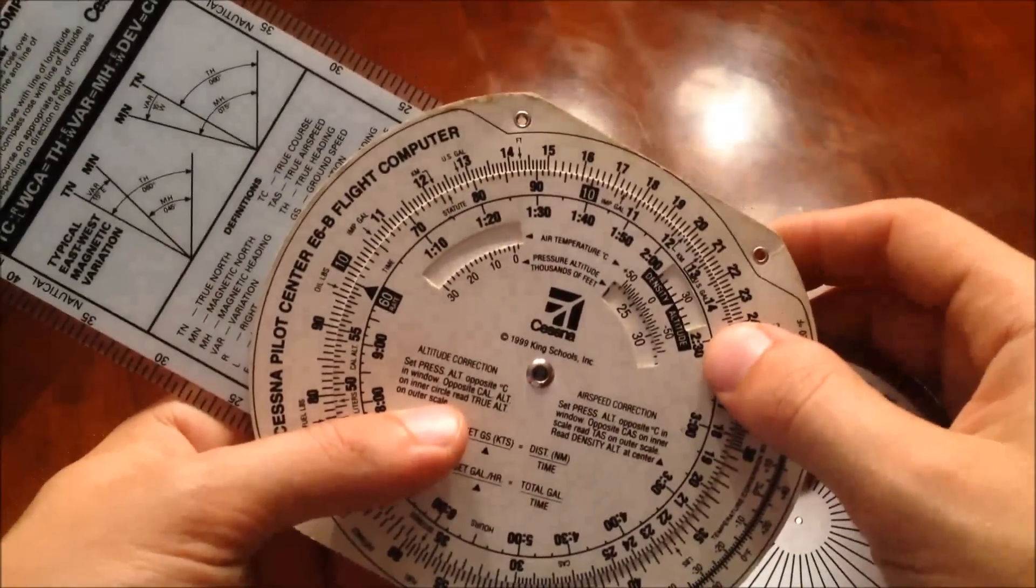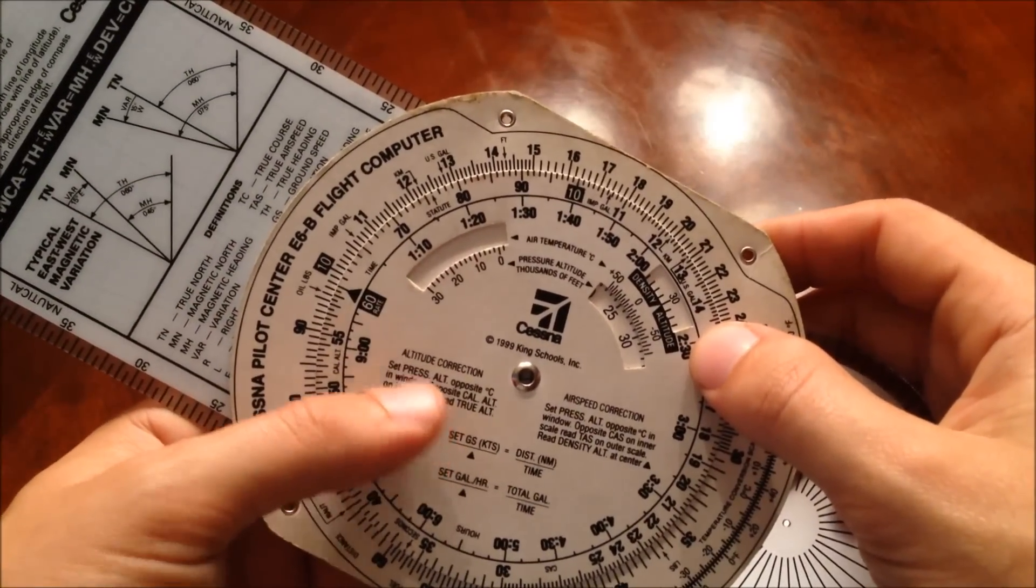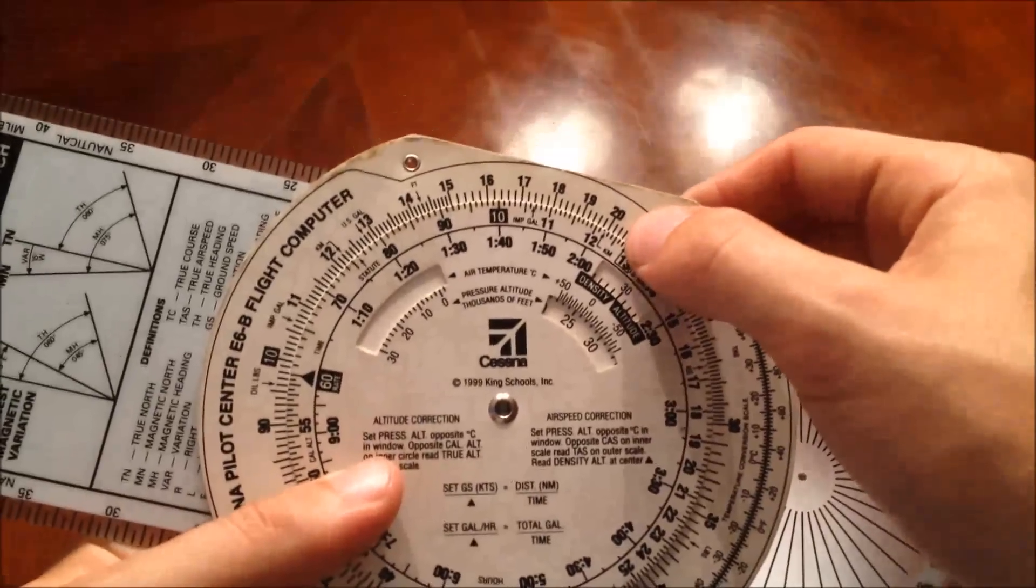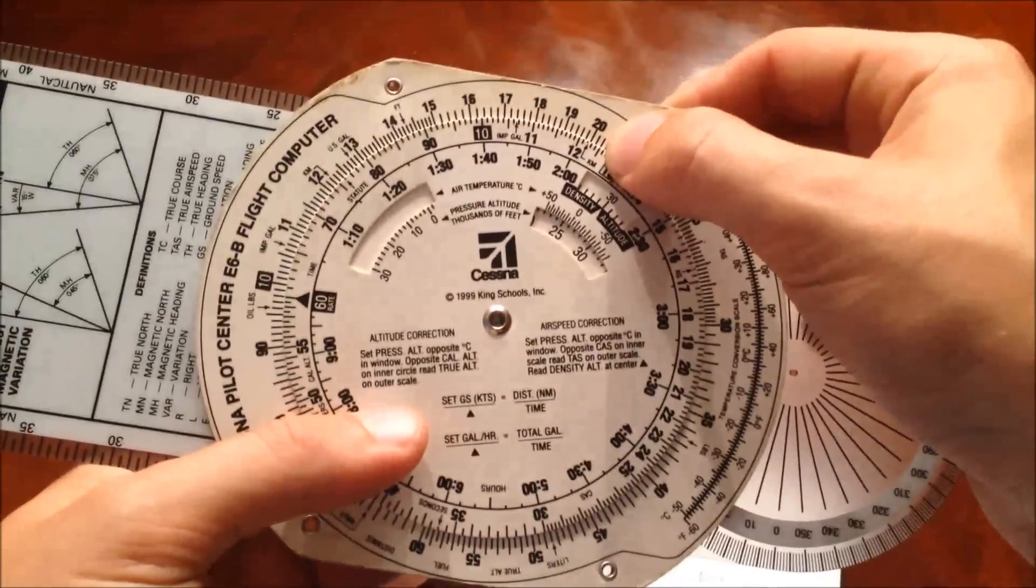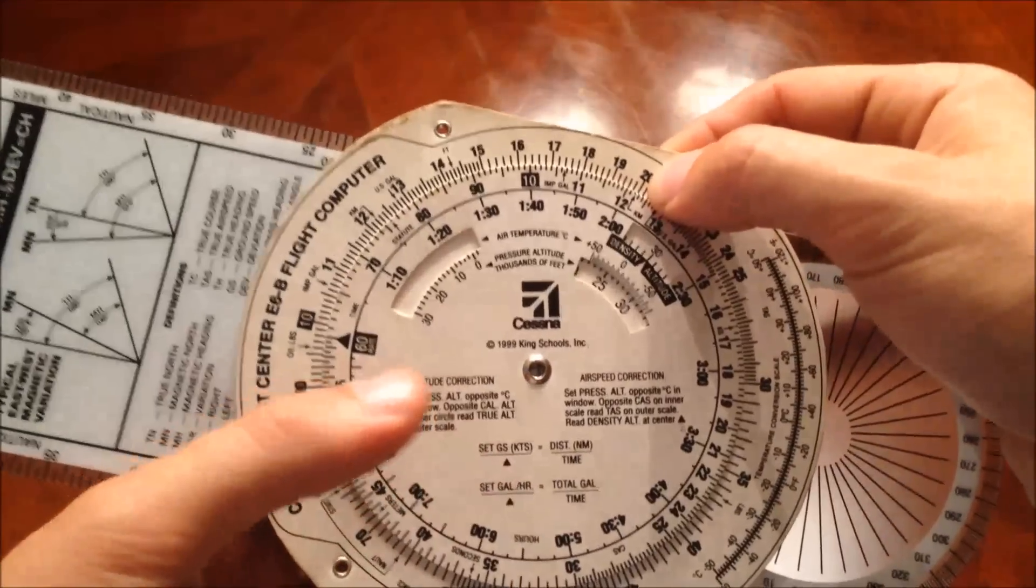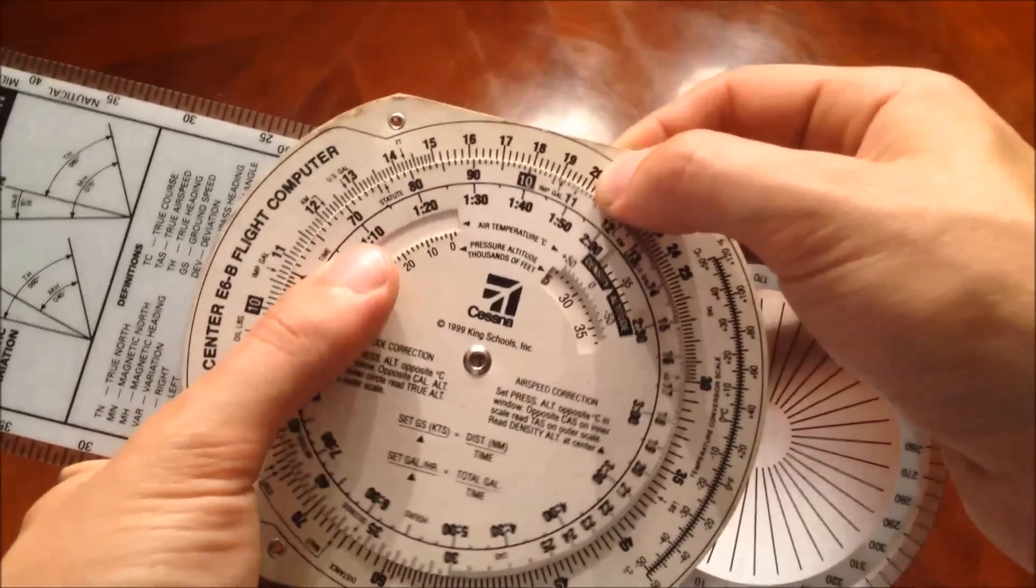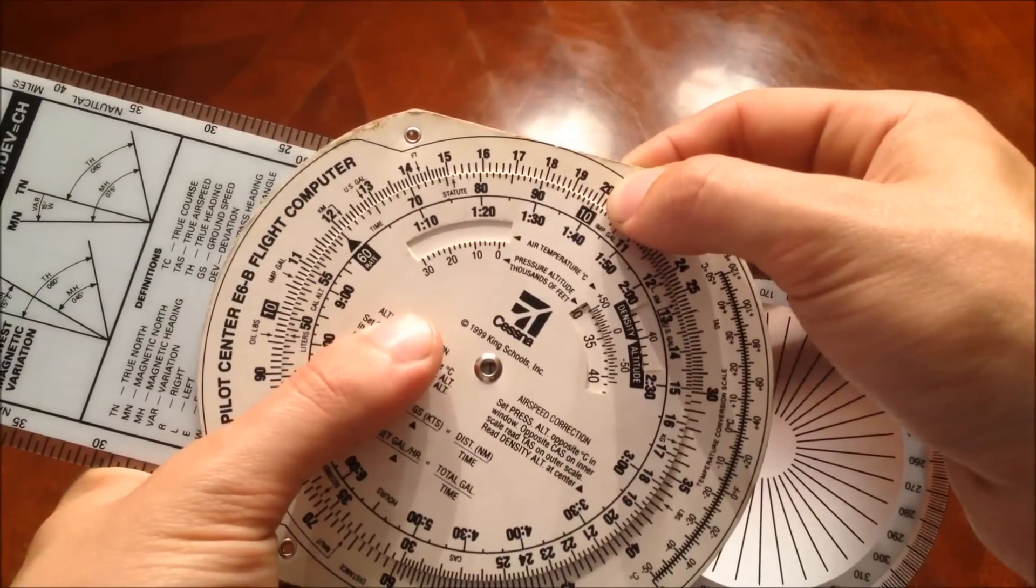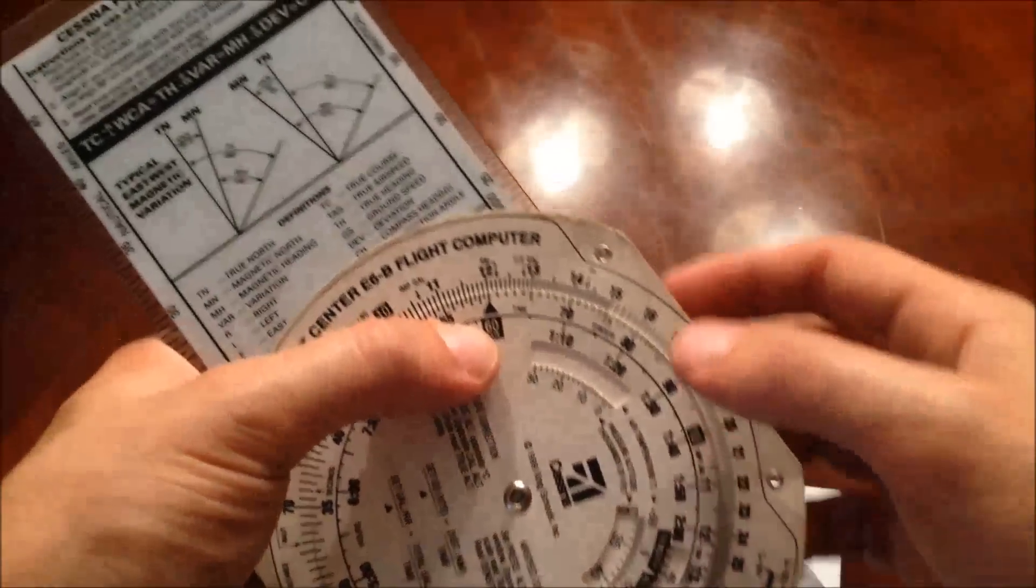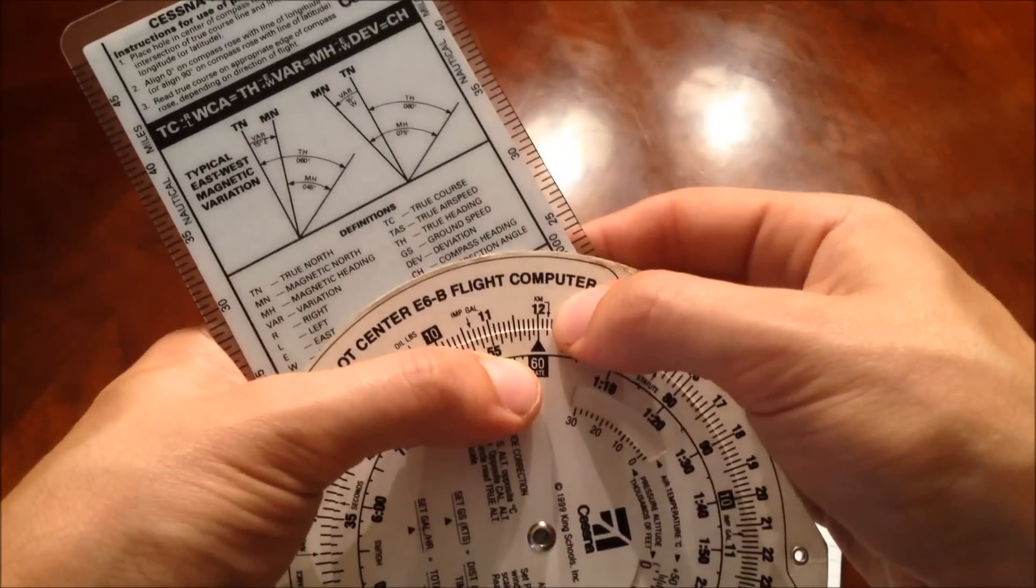So now, if we know how much time we have been flying and for how much distance, we can also calculate our ground speed. So if we've been flying for a total of 20 miles, and we'll look for the 20 here, and a time of 10 minutes, then we go up to the diamond, and our ground speed is 120 knots.